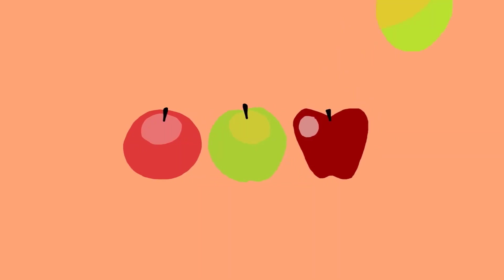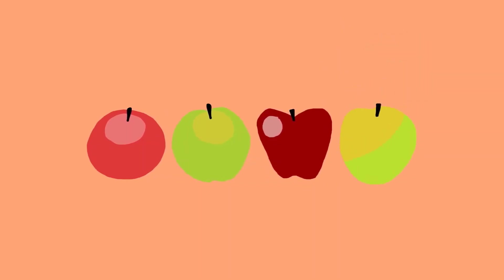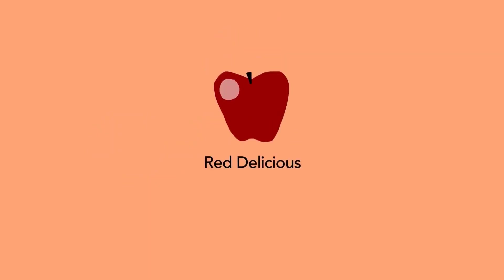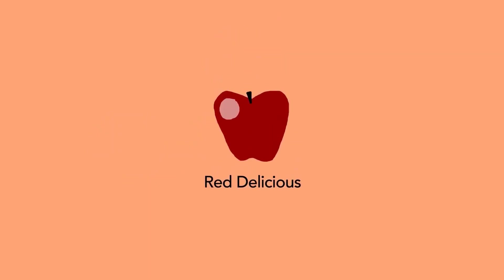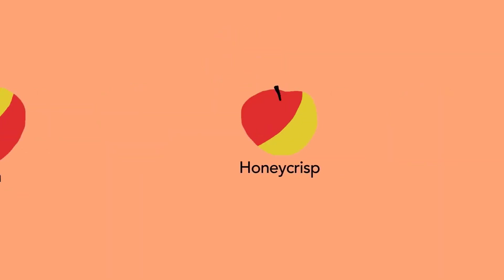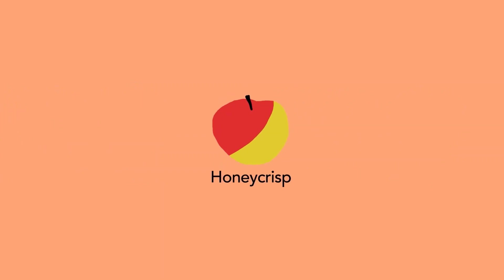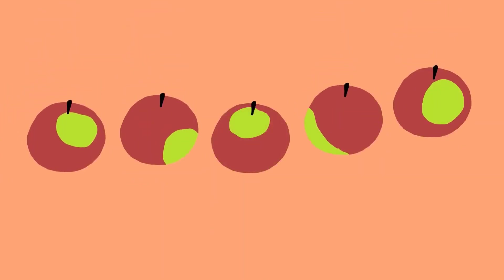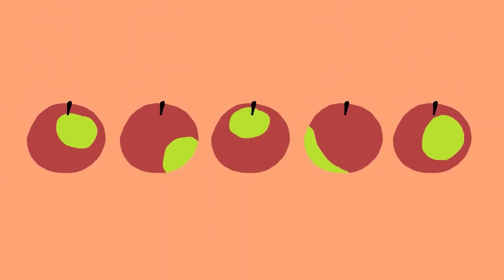Some are red, while others are green. They're all still apples, but each one with a distinct characteristic. Red Delicious is different from Macintosh, is different from Gala, is different from Honeycrisp. Even when describing one type, there might be variations from apple to apple.